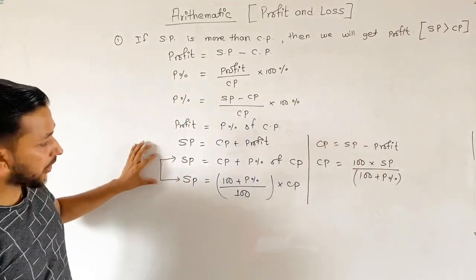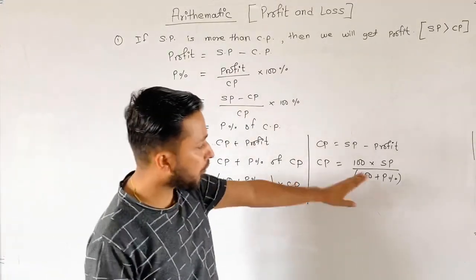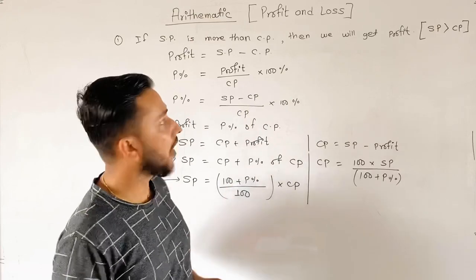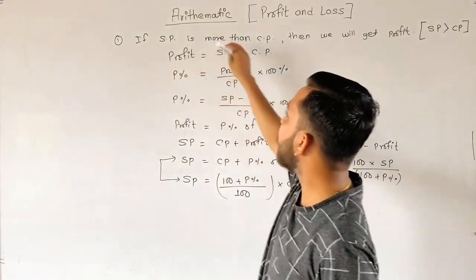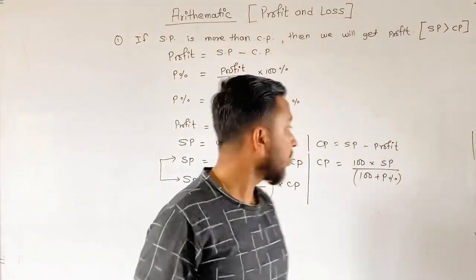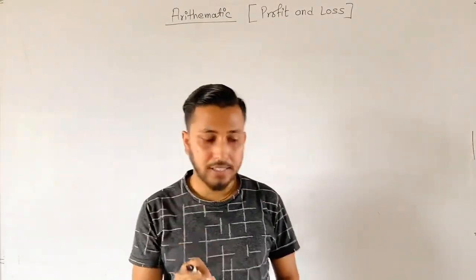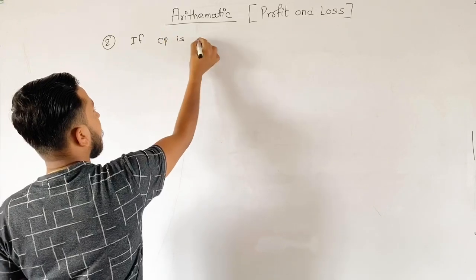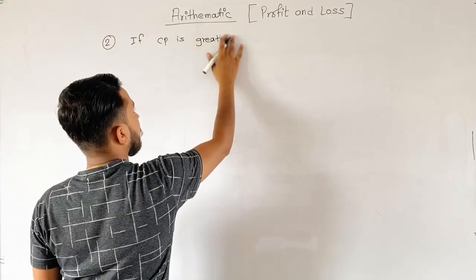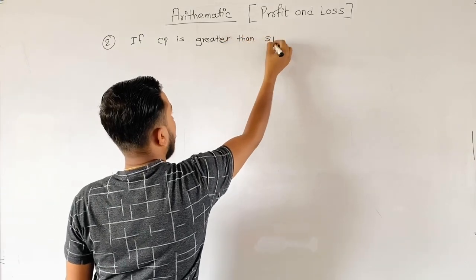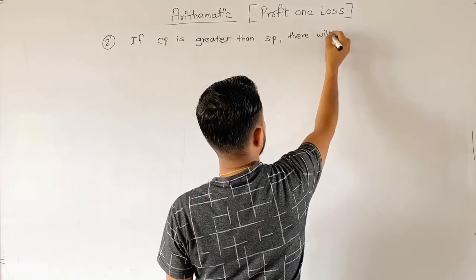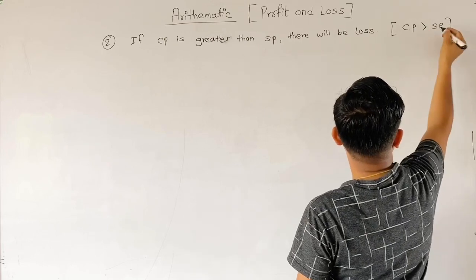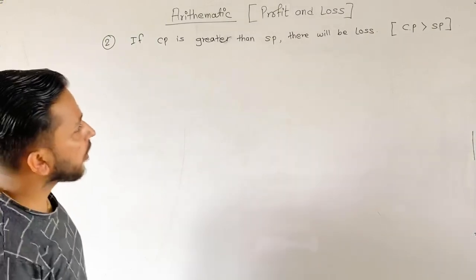The formula for CP is: CP equals 100 into SP by 100 plus profit percentage. If SP is more than CP, then there will be profit. If CP is greater than SP, then there will be loss.